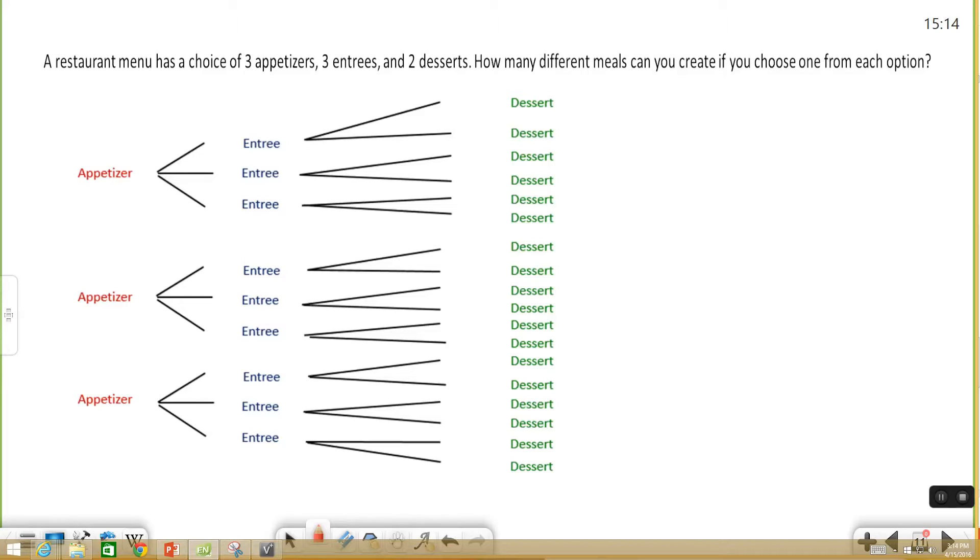What it basically says is if you're looking at the total number of outcomes you can have for different categories, you can multiply the options you have for each category together and then you will end up with the total possible outcomes.